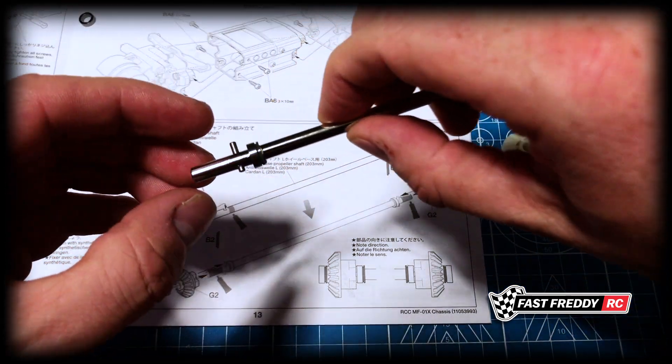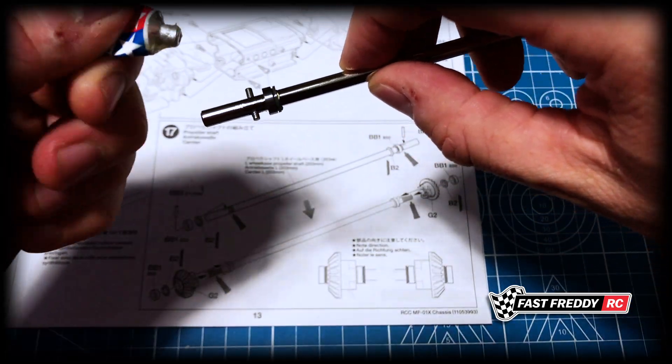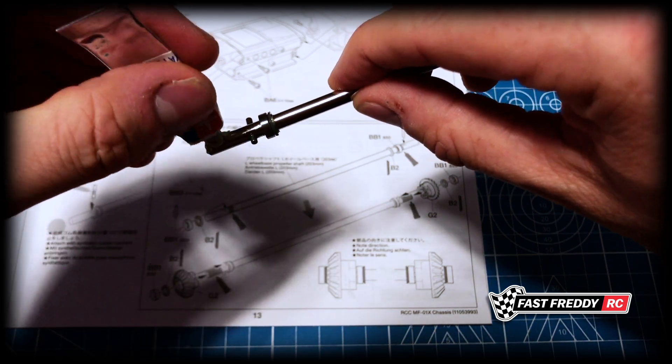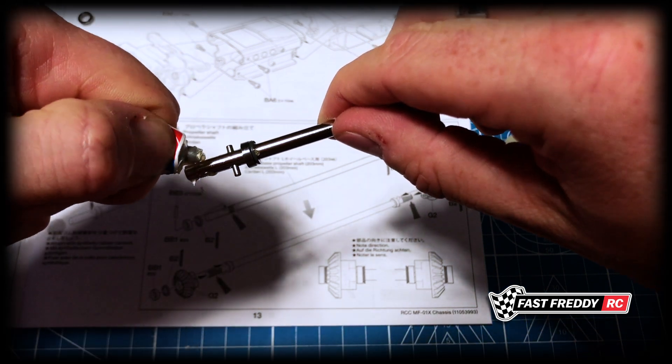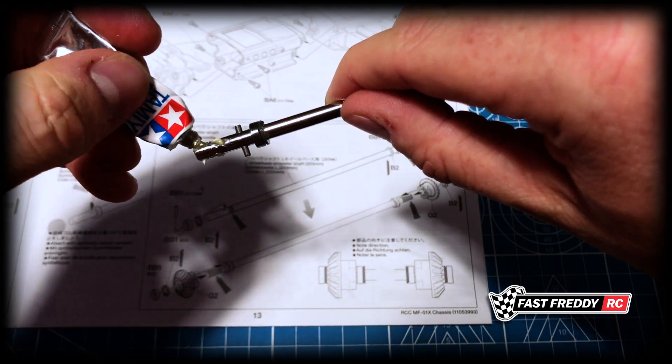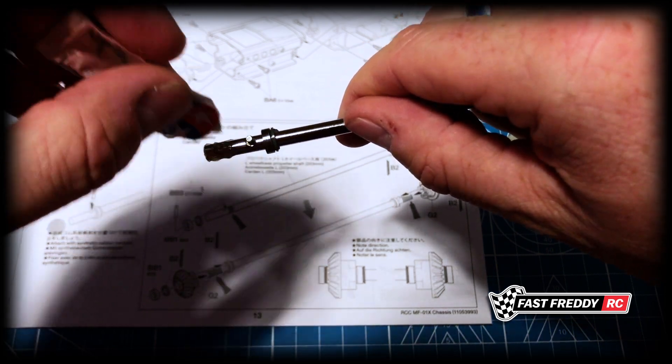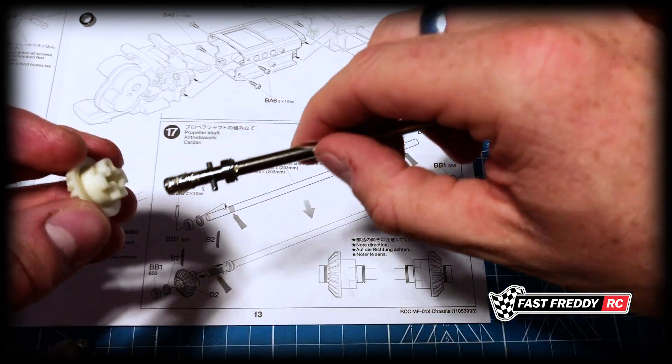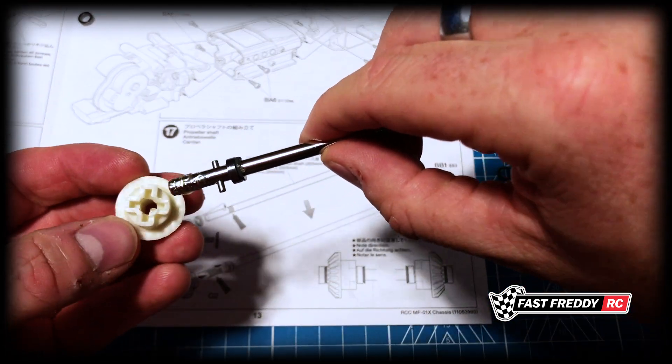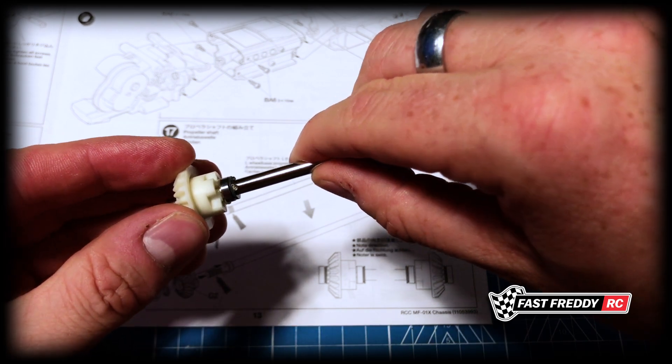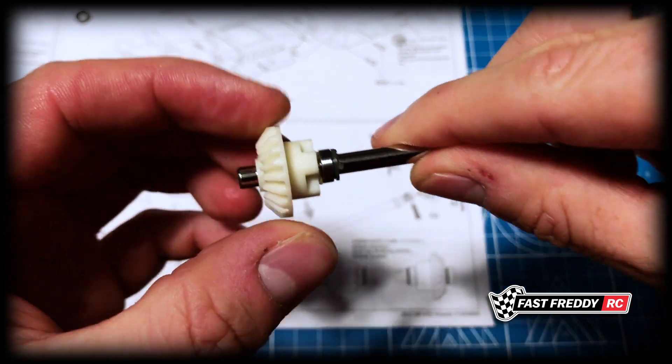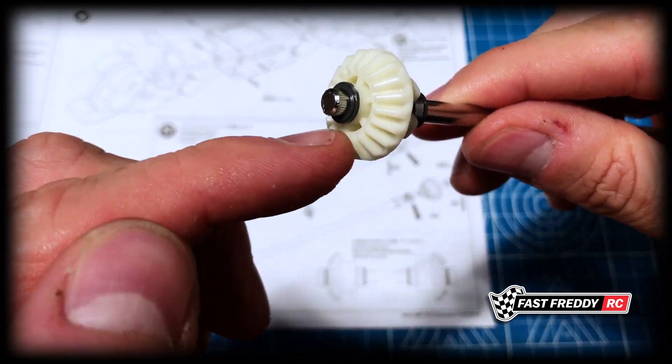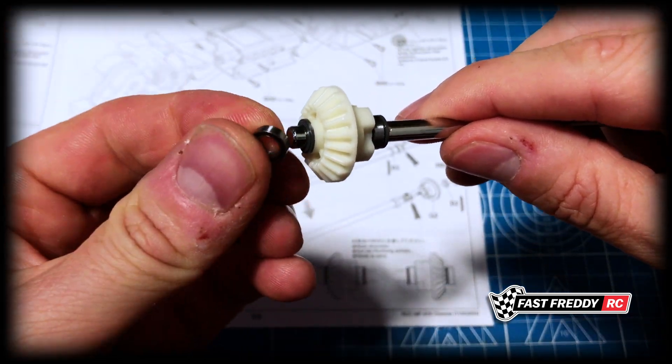And well, actually, now that I'm holding it this way, let's grease this up. And we're going to slide this on, making sure that that piece slides in and over it just like that. And then again, we've got this piece with the raised area facing out and then the bearing.